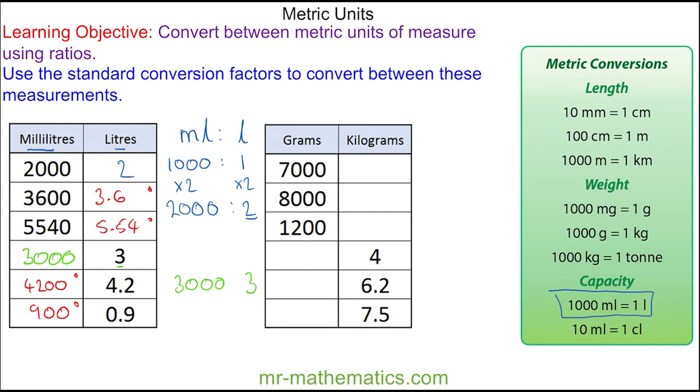So we're going to use this conversion, which we can write as a ratio between grams and kilograms. And we have 1,000 to 1. So 7,000 grams will be the same as 7 kilograms. And 4 kilograms will be the same as 4,000 grams.